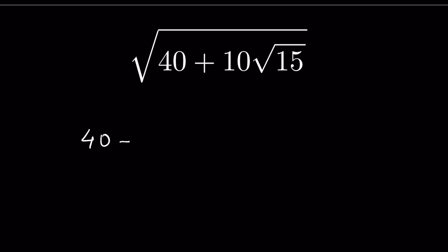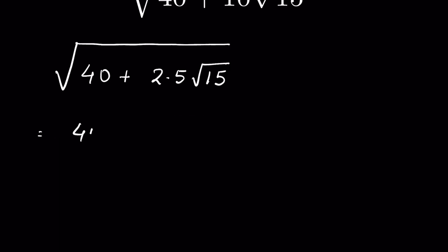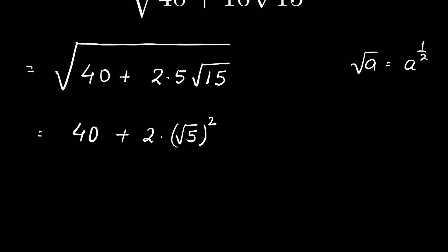So: 40 + 10√15. We can write 10 as 2 times 5, giving us 40 + 2×5×√15 under the square root. We can also write 5 as √(5²), because √(5²) equals 5 — since squaring under a square root cancels the root — so there's no difference.